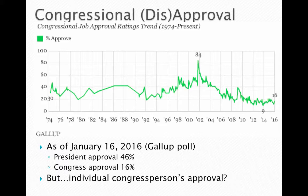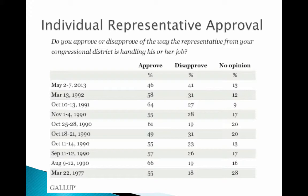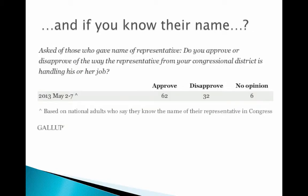What's interesting is if you break down congressional approval and disapproval — because if you know your representative, your opinion changes. If you were to ask someone if they approve or disapprove of Congress, most likely they'll say disapprove. But if you ask if they approve or disapprove of the way their representative is handling his or her job, they're more likely to approve — about 46% up to 66% or 64% that approve. And if you are able to name your representative — in Flint, that would be Representative Kildee — you are that much more likely to approve, going up about 20 percentage points.